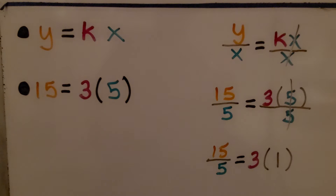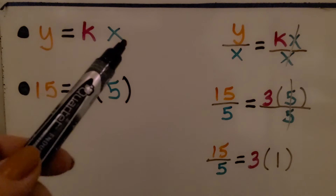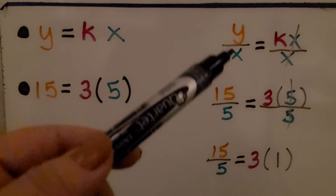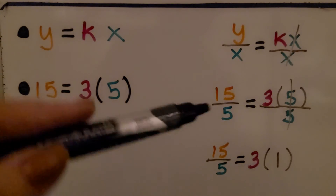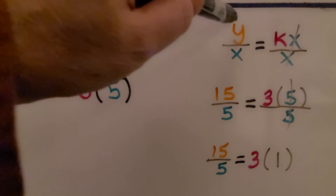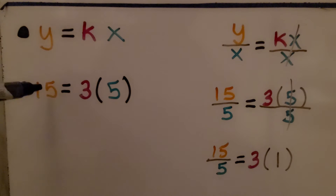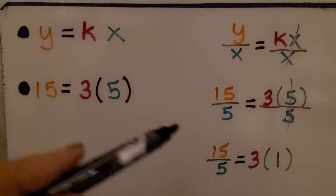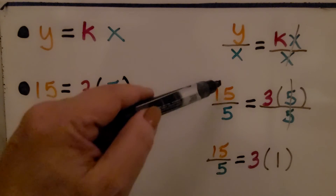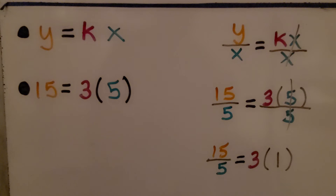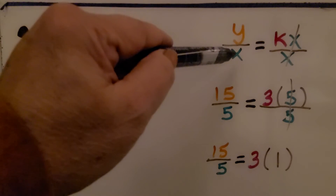Let me show you again. We have y = kx. We divide both sides of the equation by x, giving us y divided by x equals kx divided by x. Since x over x equals 1, we get y divided by x equals k. For example, if y is 15, k is 3, and x is 5: 15 = 3 × 5. Dividing both sides by 5 gives 15 divided by 5 equals 3 times 1, which is 3. So y divided by x equals k.